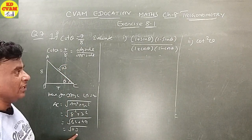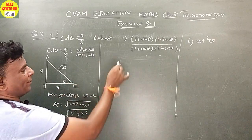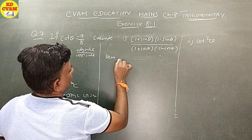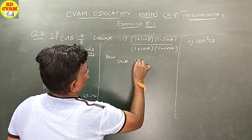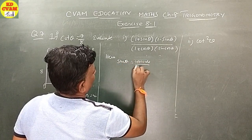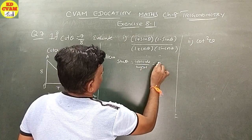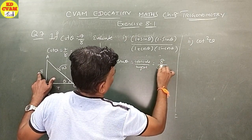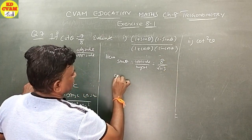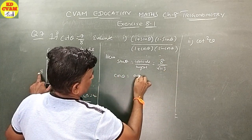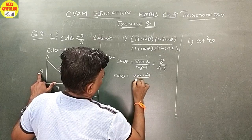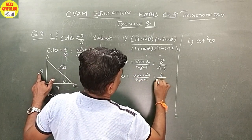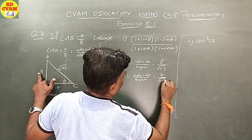Now, AC equals root 113. Sin theta equals opposite side upon hypotenuse, which equals 8 upon root 113. Cos theta equals adjacent side upon hypotenuse, which equals 7 upon root 113.